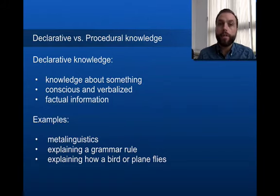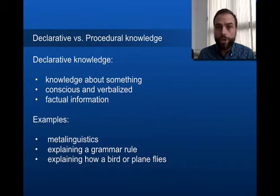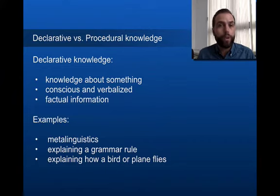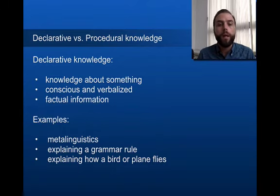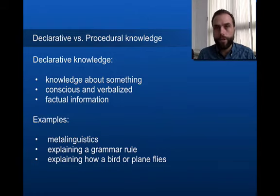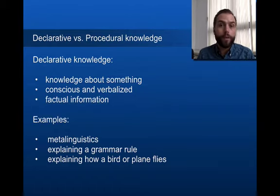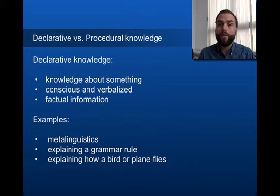The opposite of procedural knowledge is declarative knowledge — knowledge that we can declare. This is knowledge about something; it's conscious and verbalized, often factual information — things we can explain and say. An example is metalinguistics, which is language we use to talk about language. If you can explain a grammar rule, you have declarative knowledge related to that rule.